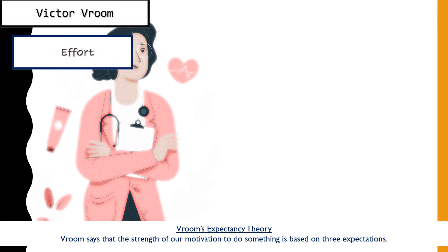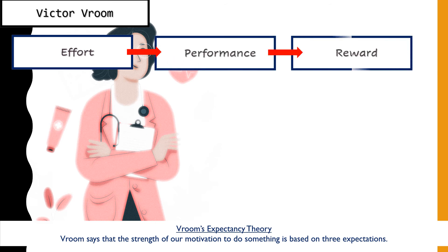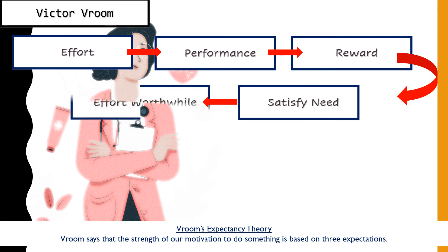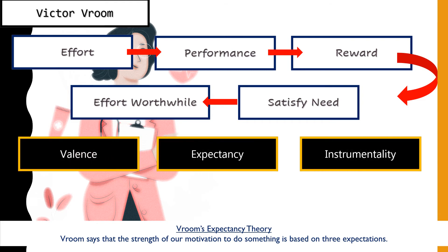Before looking specifically at the three expectations, let me explain what Vroom really means. He says that as human beings, we put effort into doing something that leads to great performance, because we want a certain reward. And if that reward satisfies a particular need, then the effort we put in becomes worthwhile. In other words, we will go all out if there is something meaningful in return.